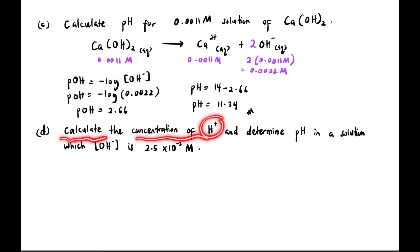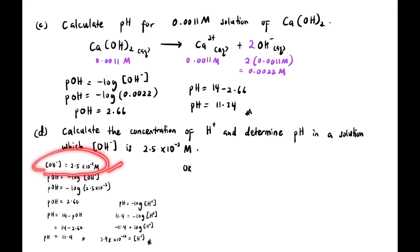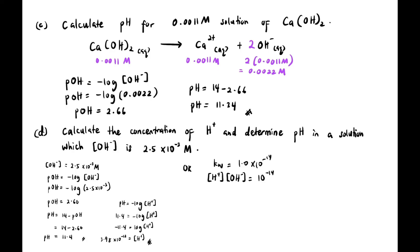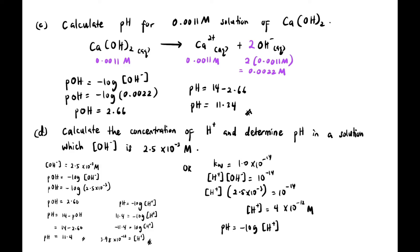Next: Calculate [H⁺] and determine pH in a solution where [OH⁻] = 2.5 × 10⁻³ M. Method 1: find pOH then pH. Method 2: use Kw = [H⁺][OH⁻] = 1.0 × 10⁻¹⁴, substitute [OH⁻] to find [H⁺], then calculate pH = 11.4.